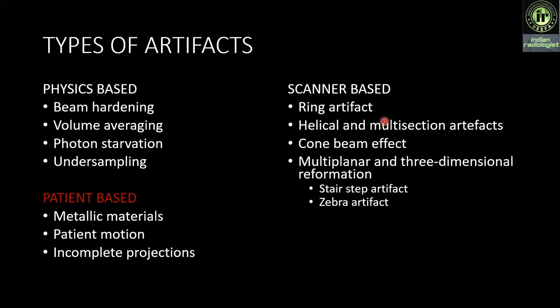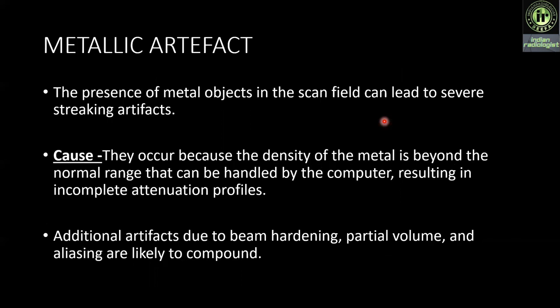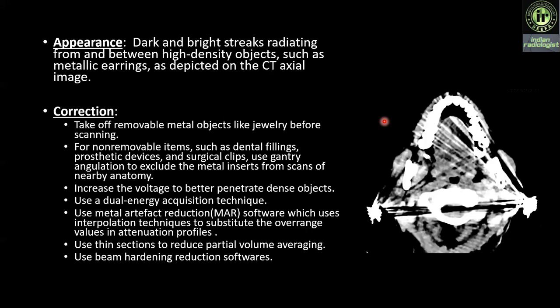Next we come to patient-based artifacts, which include metallic artifacts, motion artifacts, and incomplete projection. The presence of metal objects in the scan field can lead to severe streaking artifacts. Cause: they occur because the density of the metal is beyond the normal range that can be handled by the computer, resulting in an incomplete attenuation profile. Additional artifacts due to beam hardening, partial volume, and aliasing are likely to compound. Here we see dark and bright streaks radiating from and between high density objects like metallic earrings.